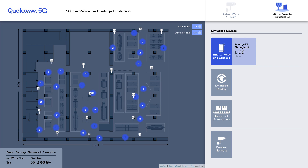In this demonstration, we will see how 5G millimeter wave can support diverse connectivity needs in new verticals. As an example, we have simulated a 5G millimeter wave private network supporting a smart factory use case. Here is a smart factory floor map — it's about 34,000 square feet with a 12-foot ceiling height. We have 16 millimeter wave sites covering the space, including the factory floor and some office space. The millimeter wave network operates in the 28 GHz band with 800 MHz bandwidth.